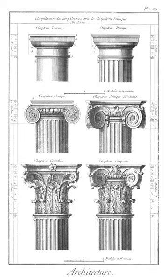Portcullis: heavy wooden or metallic grid vertically sliding down and thus blocking the main gateway of a medieval castle or fortification.